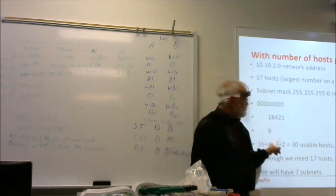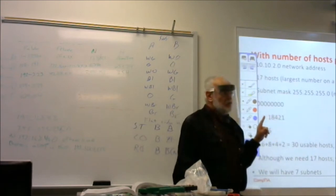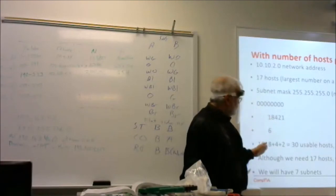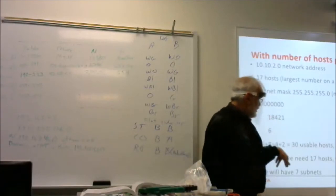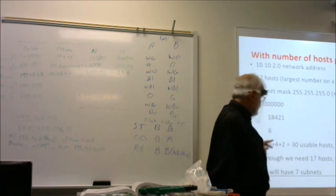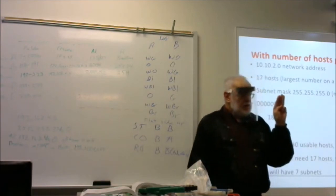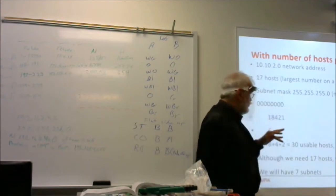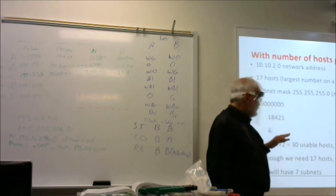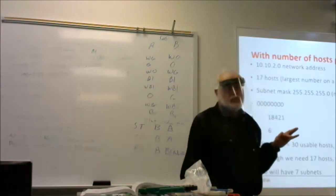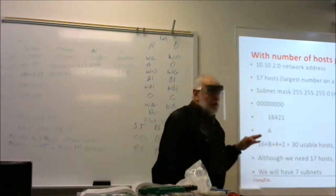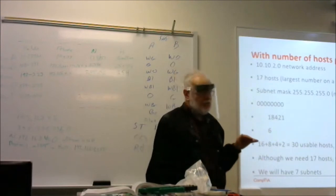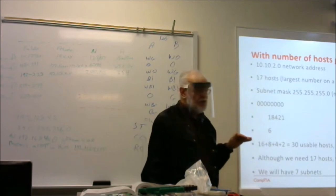We need to be able to have at least 17 hosts, and 30 fits that. We're keeping 5 columns for hosts, which means at least 3 bits remain for subnets. Those first 3 bits — the 1, 2, and 4 columns counting backwards — give us 7 subnets. So we're going to have 7 subnets available.